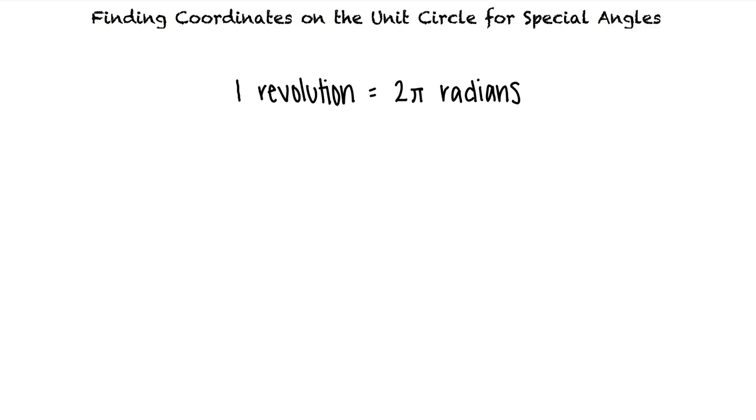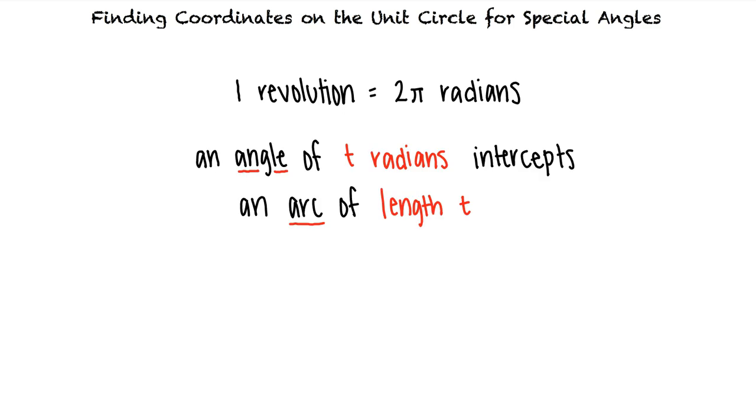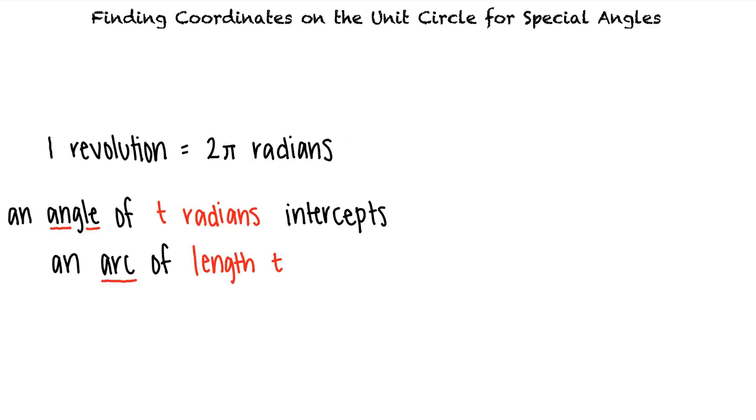Because we're talking about the unit circle, a central angle of t radians intercepts an arc of length t. The value t can be considered the measure of a central angle in standard position. Starting at the point 1 comma 0, we can draw an arc of length t along the unit circle.